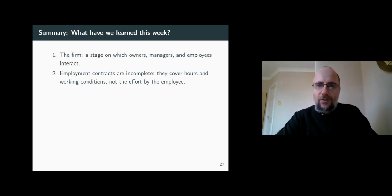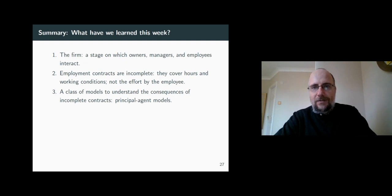Principal-agent models can reveal, for example, what happens with worker effort when it's unobservable. The labor discipline model is just one example of those principal-agent models. In this model, the employer proposes a wage which is never equal to the minimum wage. The reason is that minimum wages minimize the wage bill indeed, but they're not optimal for the firm because they extract very little effort from the workers. That's why firms pay workers more than their reservation wage.